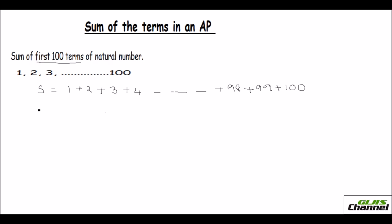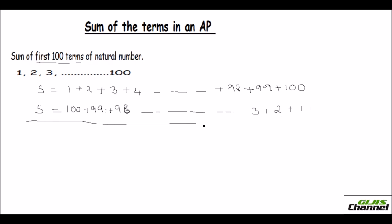I'm going to take another set of numbers — another S, the sum of the same series from 1 to 100, but this time written in reverse: 100 plus 99 plus 98, going all the way down to 3 plus 2 plus 1. Now let me add these two series together. Adding S plus S gives us 2S.